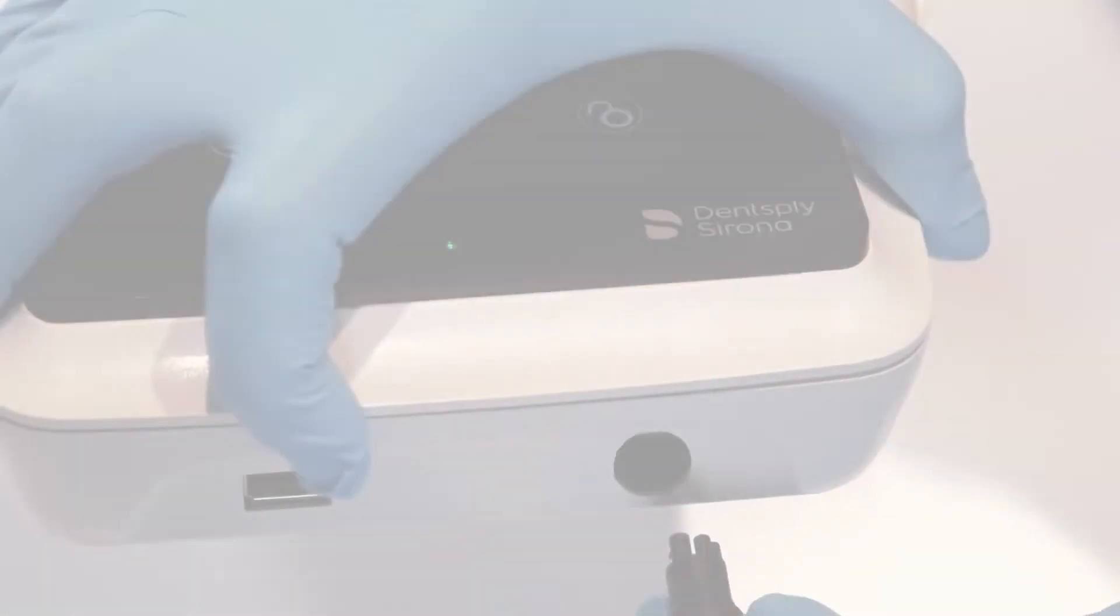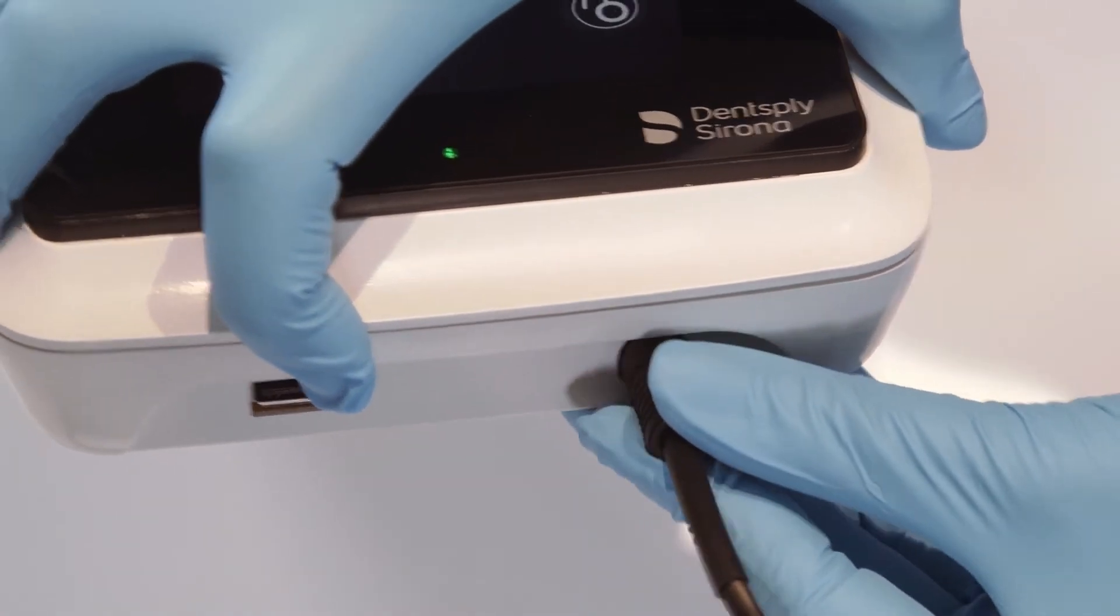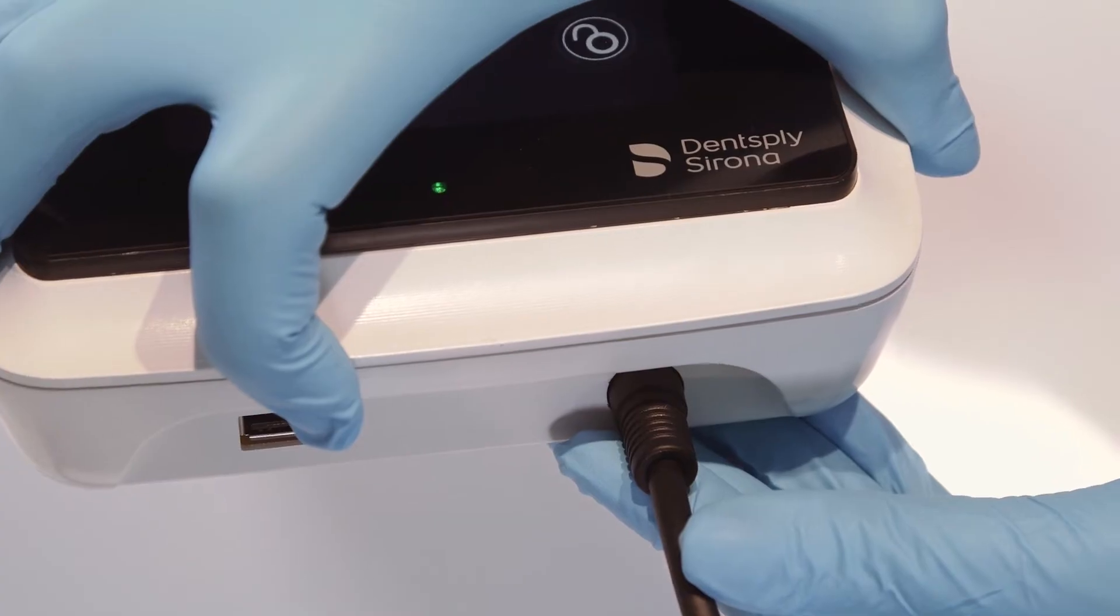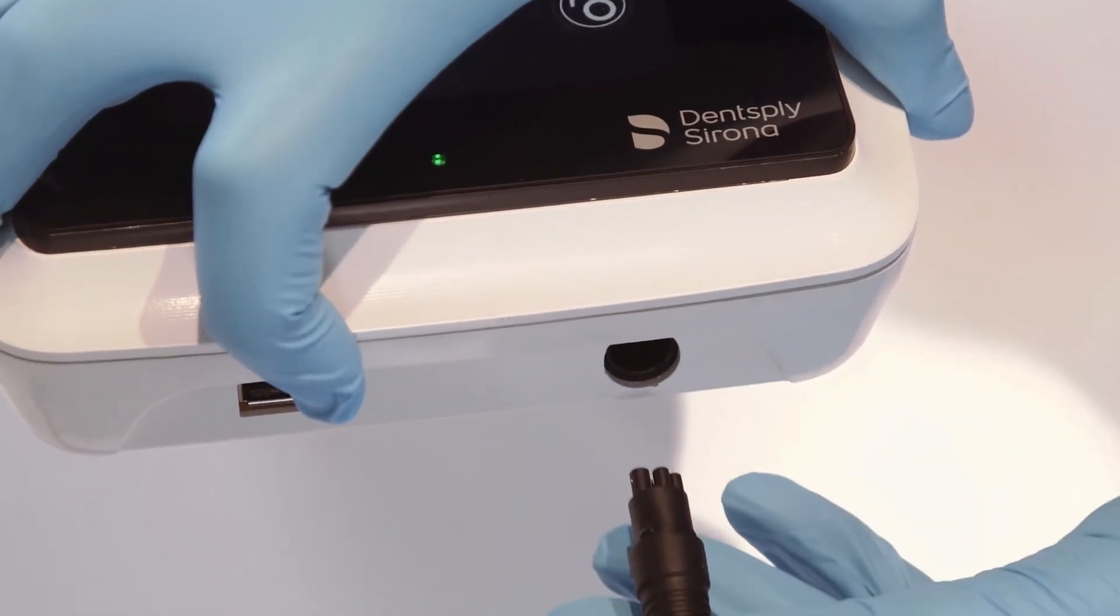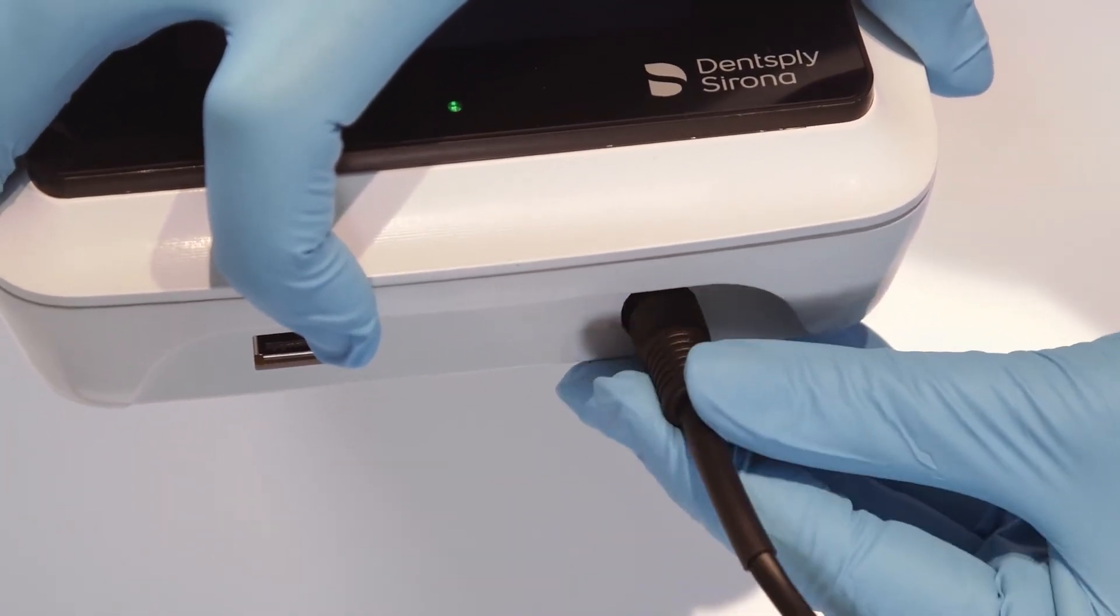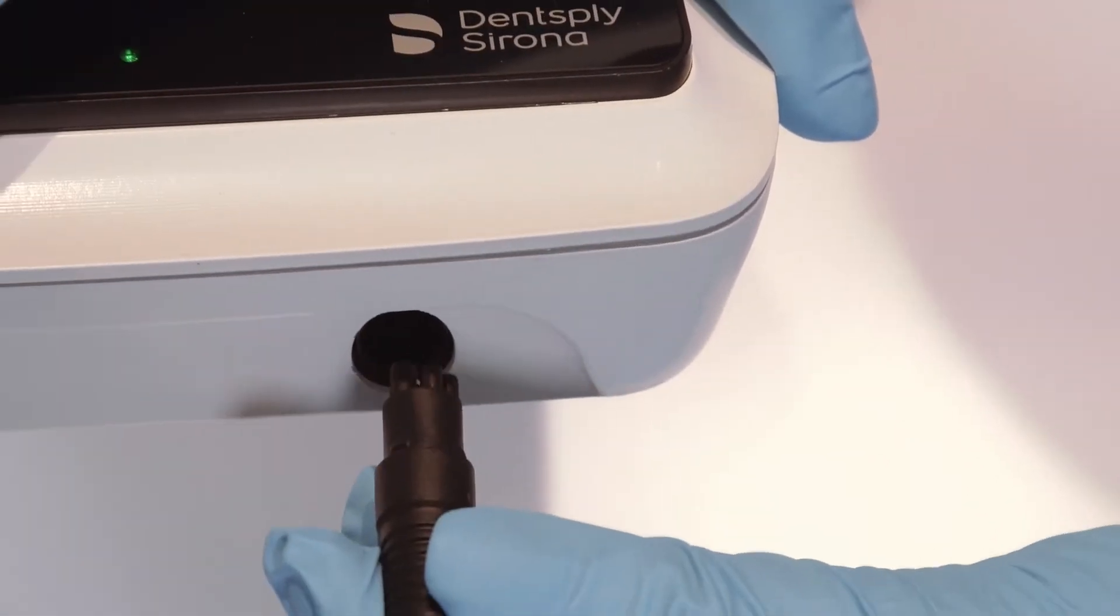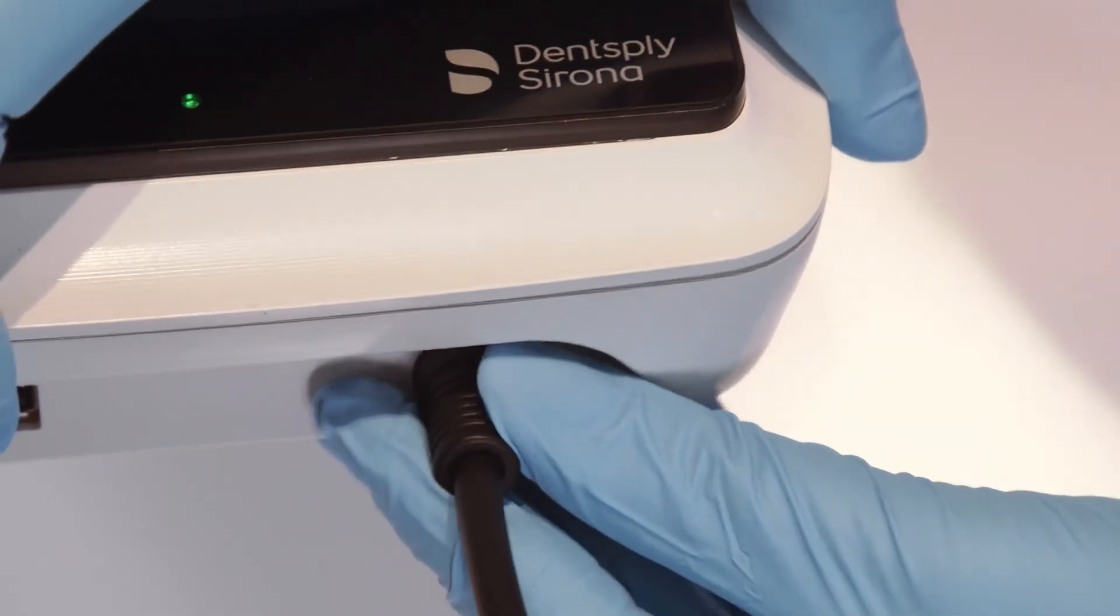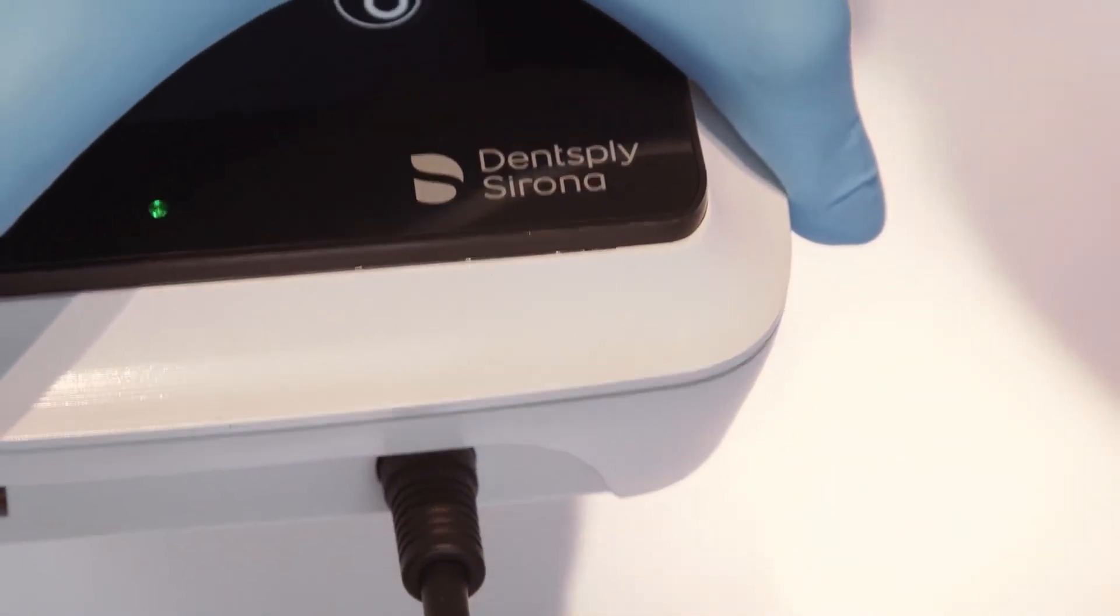To connect the featherweight handpiece cable to the Cavitron 300 series ultrasonic scaling system, insert the black handpiece cable connector into the port on the front of the Cavitron 300 series ultrasonic scaling system. If the cable connector does not seat into the system's port, gently rotate the cable connector until contacts align and then fully insert the connector.